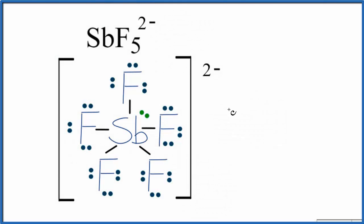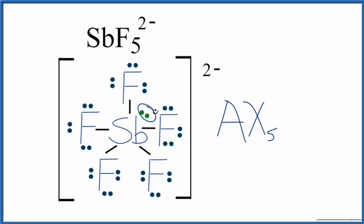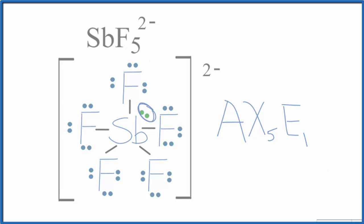You could also use the AXE notation to figure out the molecular geometry. A is the central atom — that's Sb. X is the number of bonded atoms — we have 5 fluorine atoms, so X5. E is the lone pairs — we have one lone pair, so E1. Looking that up, you'd find it's square pyramidal, just like we found before. This is Dr. B with the Lewis structure and molecular geometry for SbF5 2-. Thanks for watching.